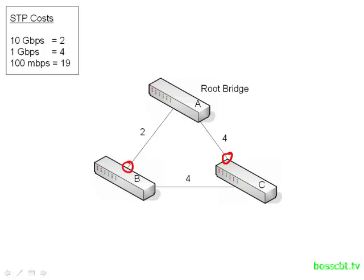Now the second task: after a switch determines its root port to the root bridge, it needs to figure out what the other ports on the switch are going to be doing. Switch B and switch C are connected, so that's a shared network segment between them. Who's going to be in charge of that particular segment? Switch B and switch C will figure out which one of them is going to be in charge of sending and receiving frames for that one particular segment, because both of them can't do it — that would open up a potential loop. Only one can be in charge, and they do this by comparing the cost each one has to get to the root bridge.